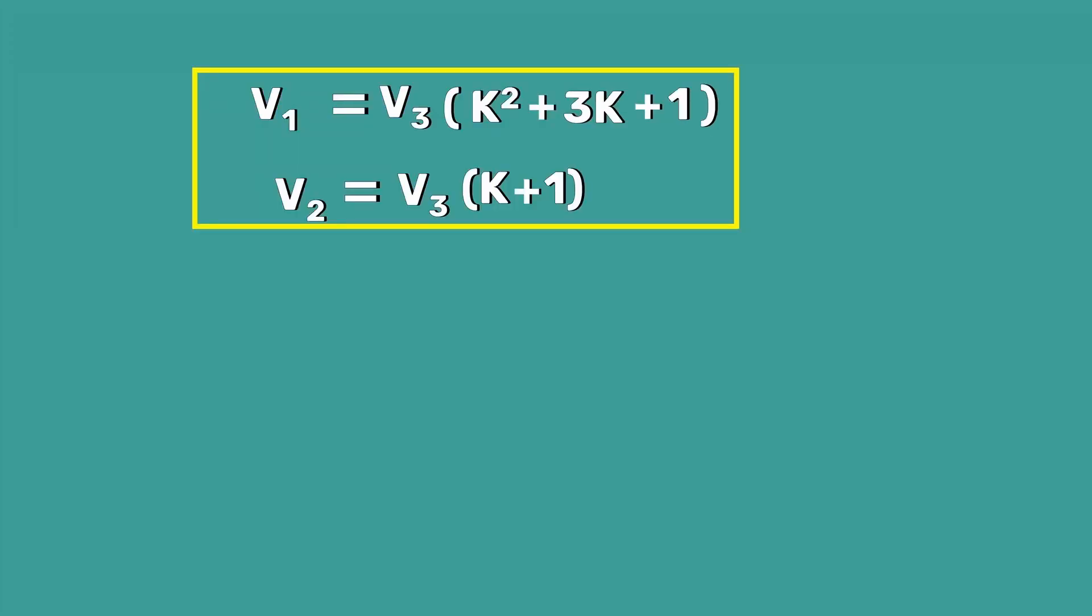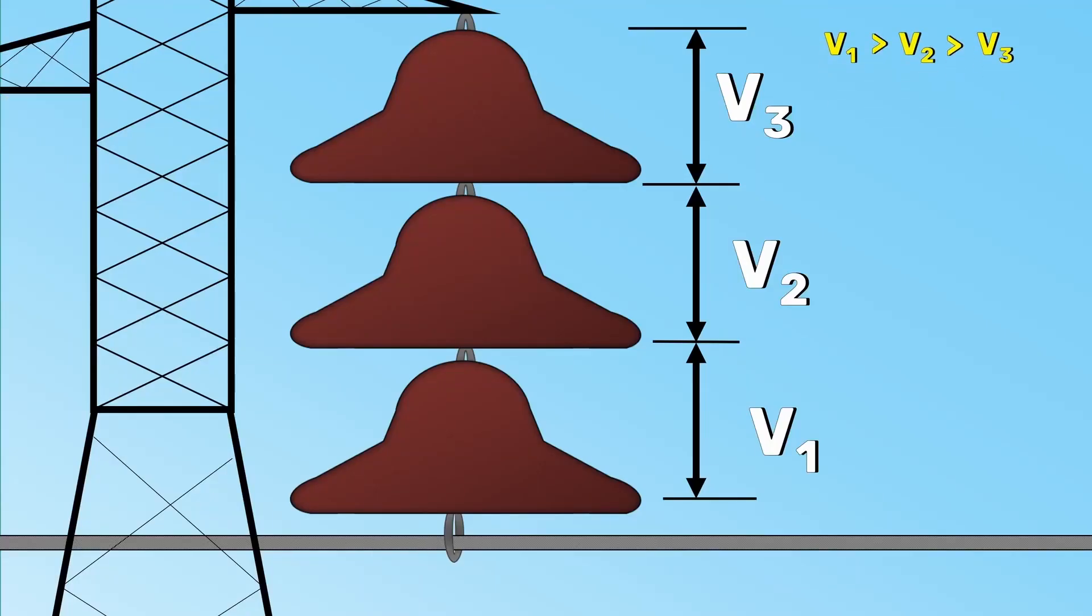Looking carefully at this equation, it is very clear that V1 is greater than V2 which is greater than V3. This means the voltage is not uniformly distributed across the disc.